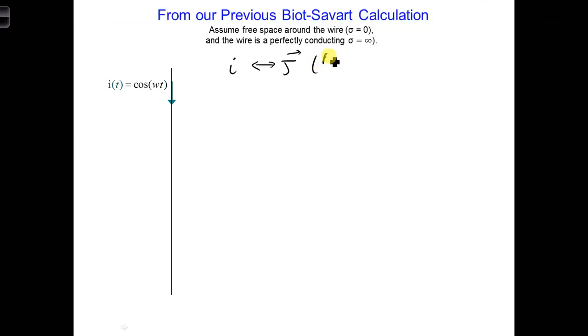J is in amps per meter squared, and I is in units of amps. So if we're going to integrate J over the surface area, say a cross-sectional cut through the wire, then we could get I.